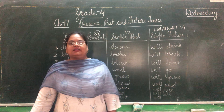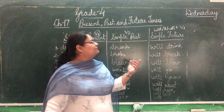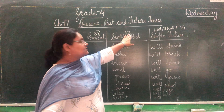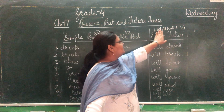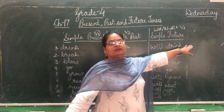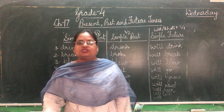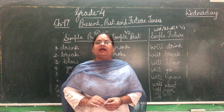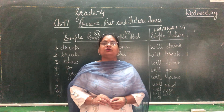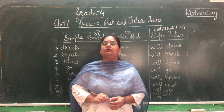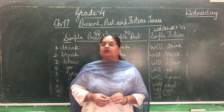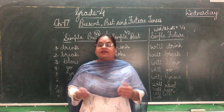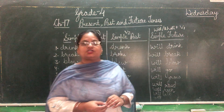Hopefully everyone understands these forms of verbs. Verb 1 is present, verb 2 is simple past, and for future we use will or shall with the verb's first form. Children, there are many more verbs in other books as well. You can go to the library to find those verbs, write them down, and remember them for future use.